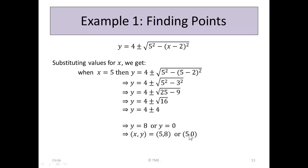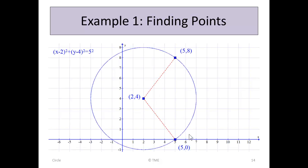So we now have two points on the circle: when x is 5, y is either 8 or 0, giving points 5, 8 and 5, 0. We also know it's centred at 2, 4. We can draw that circle, and we can see that its centre is at 2, 4 and that both 5, 8 and 5, 0 lie on the circle. That's how we establish the points, and there is the equation of that circle.